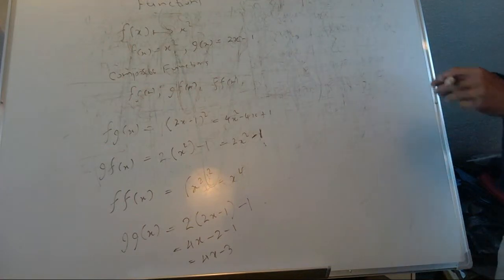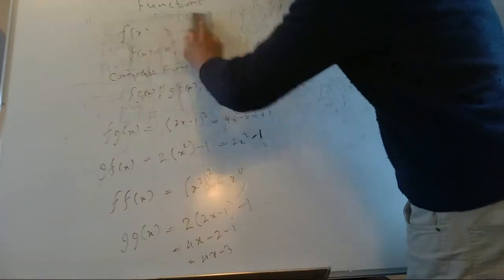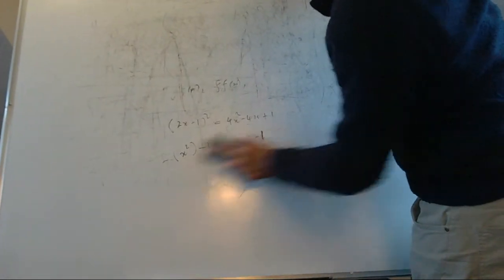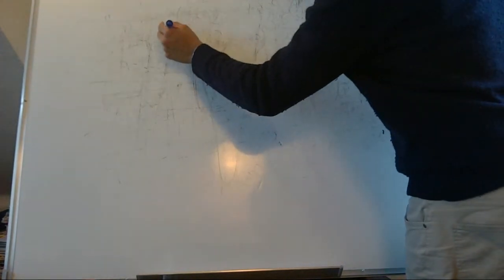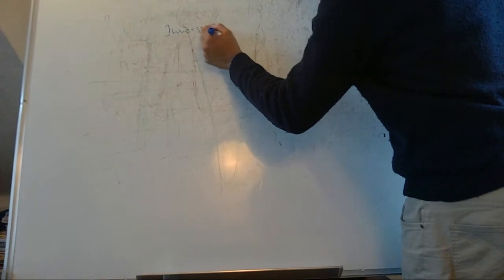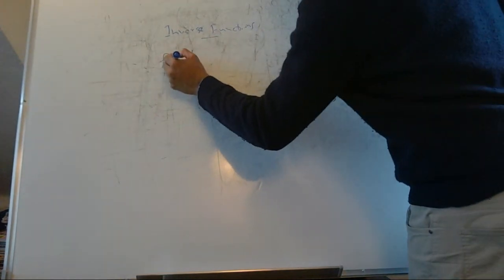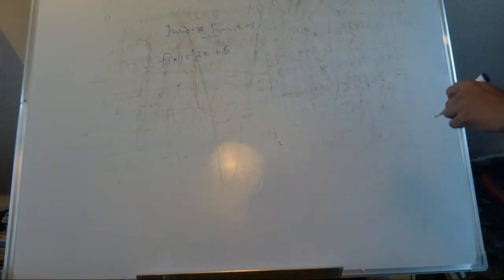Now let's do inverse functions on a new page. Inverse means: if you have a function taking a number to another number, the inverse function brings that number back to where it started. Let's say we have f of x equals 2x plus 5.